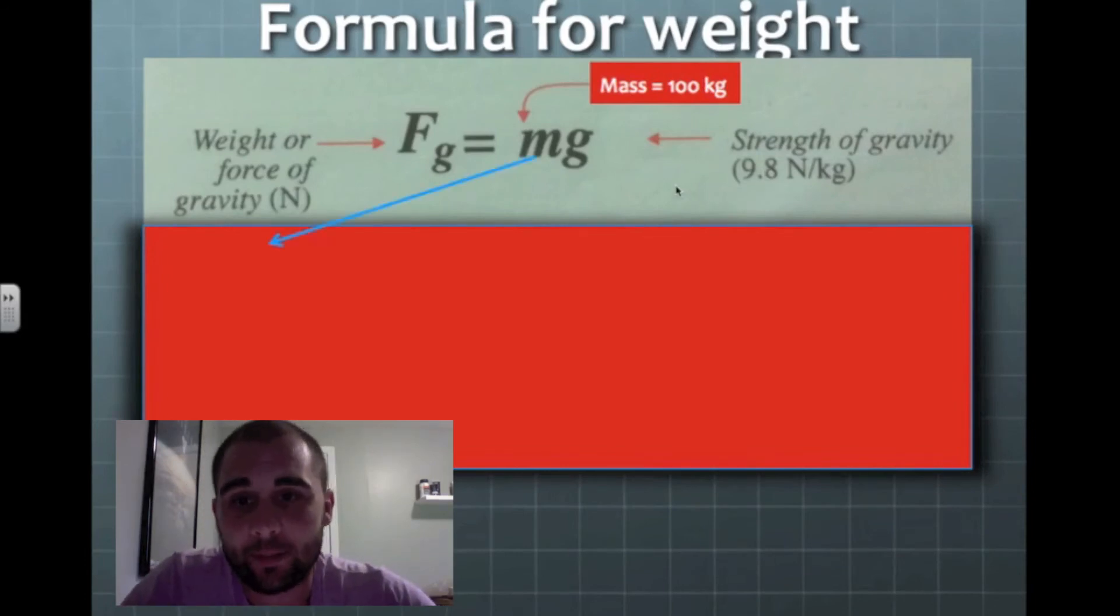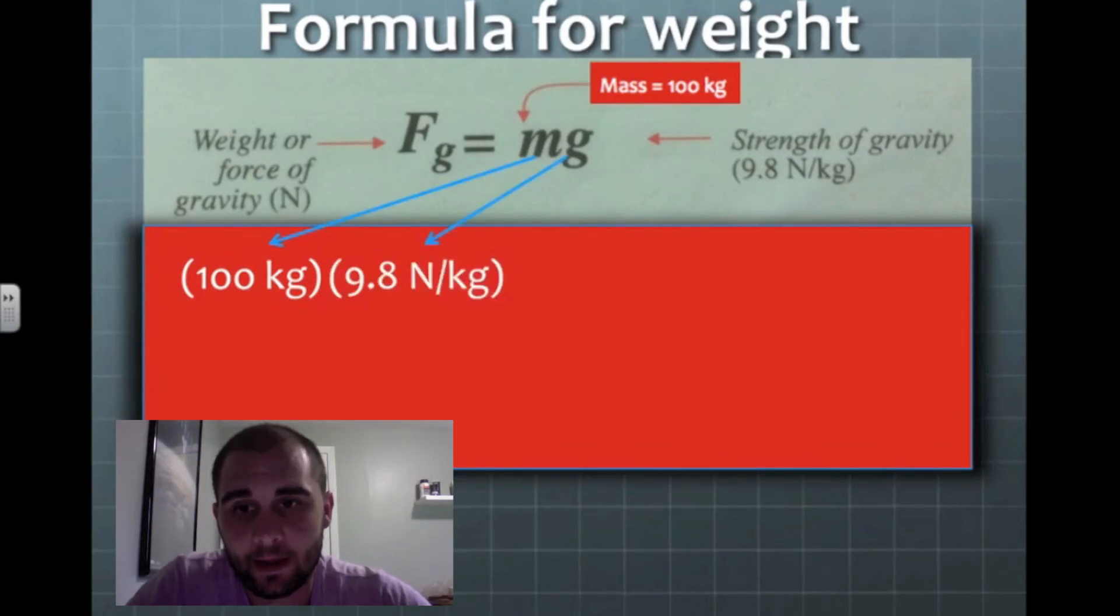First thing I'm going to do is I'm going to plug in my mass. So it's going to be 100 kilograms. Multiply that by 9.8. And I'm going to cross out my kilograms there. I'm going to cross out my kilograms there. And that leaves me with 980 newtons.